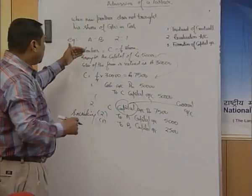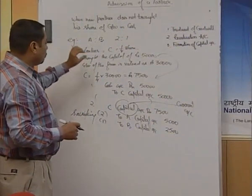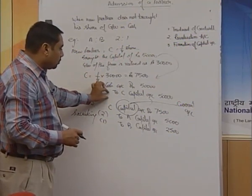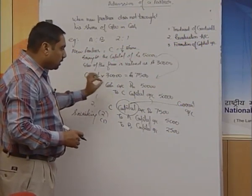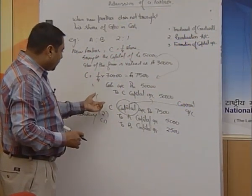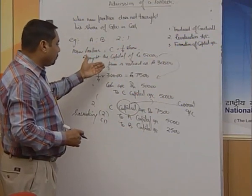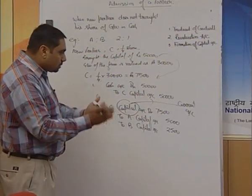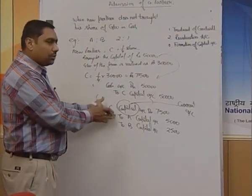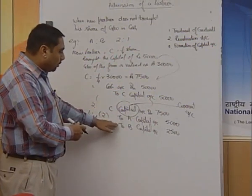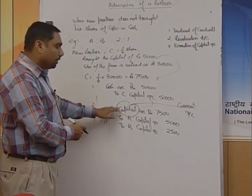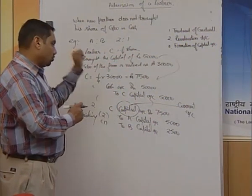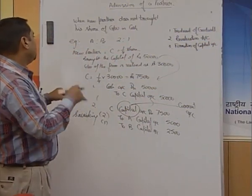So the entry is: first, Cash Account debit to C Capital Account. Second, as he has not brought any amount of premium in cash, we take his share of goodwill from his capital and distribute that amount among the old partners in their sacrificing ratio. This is the first case.